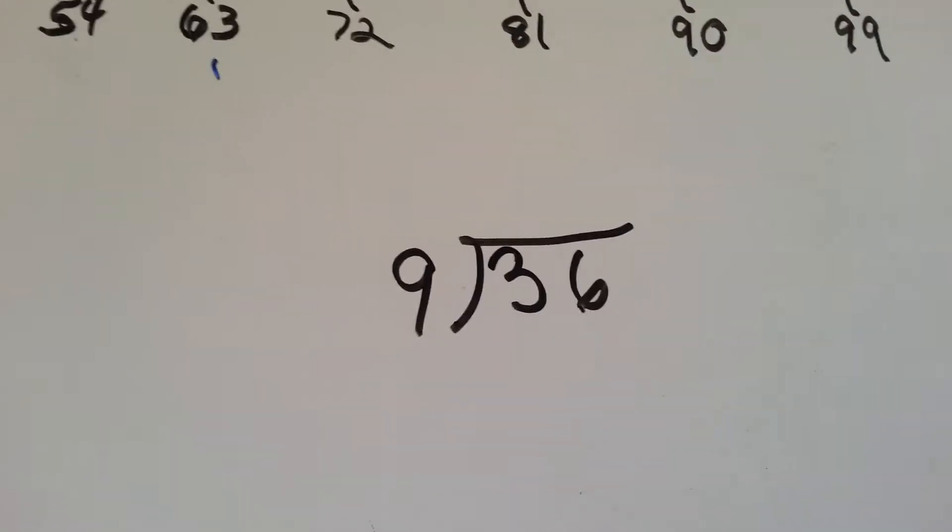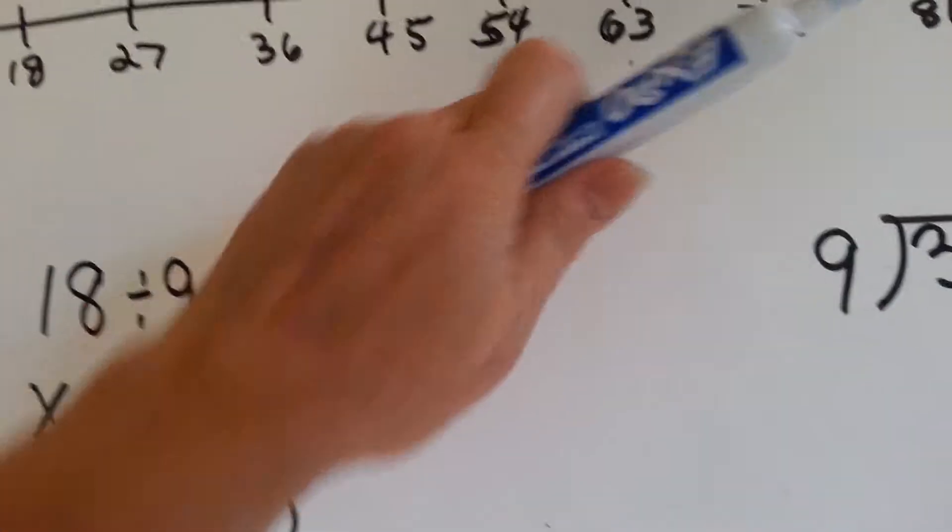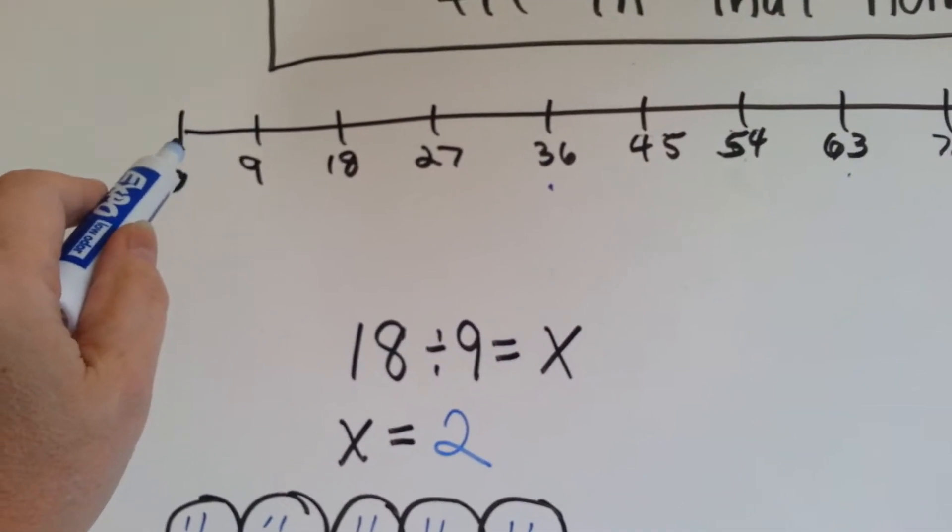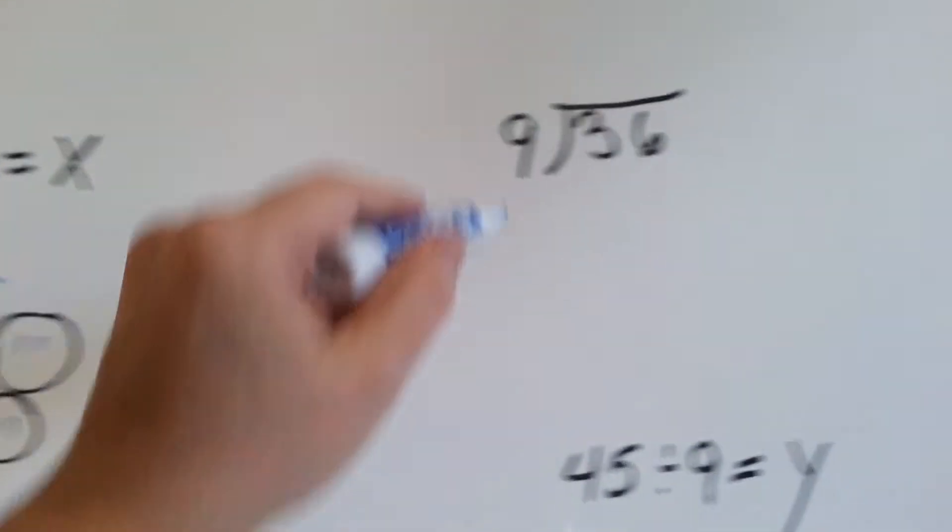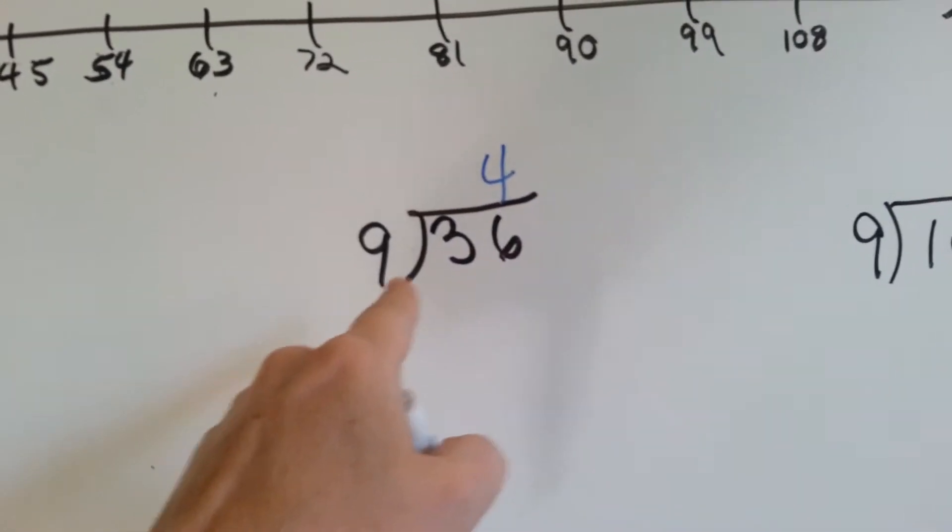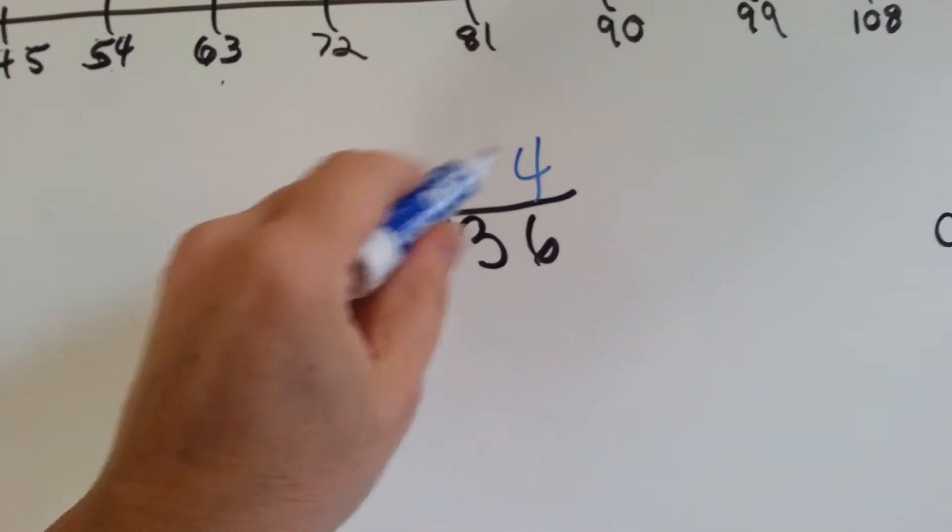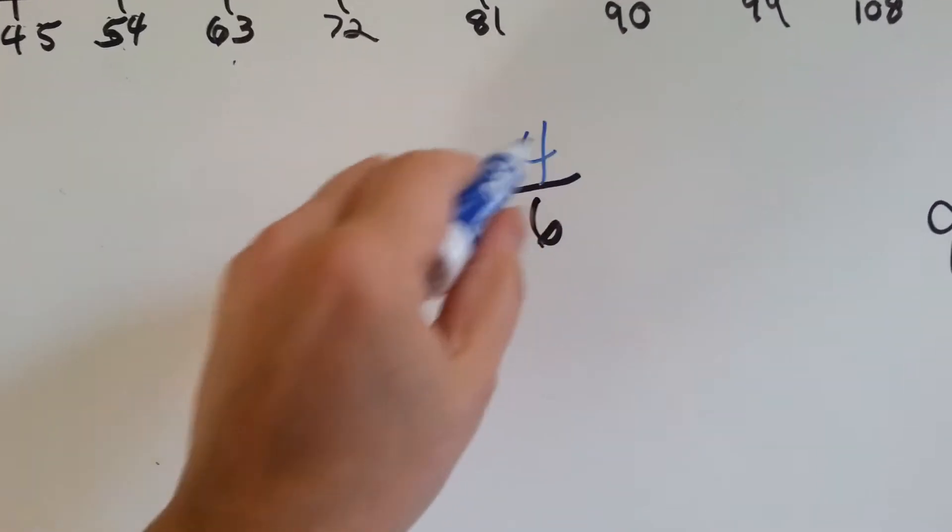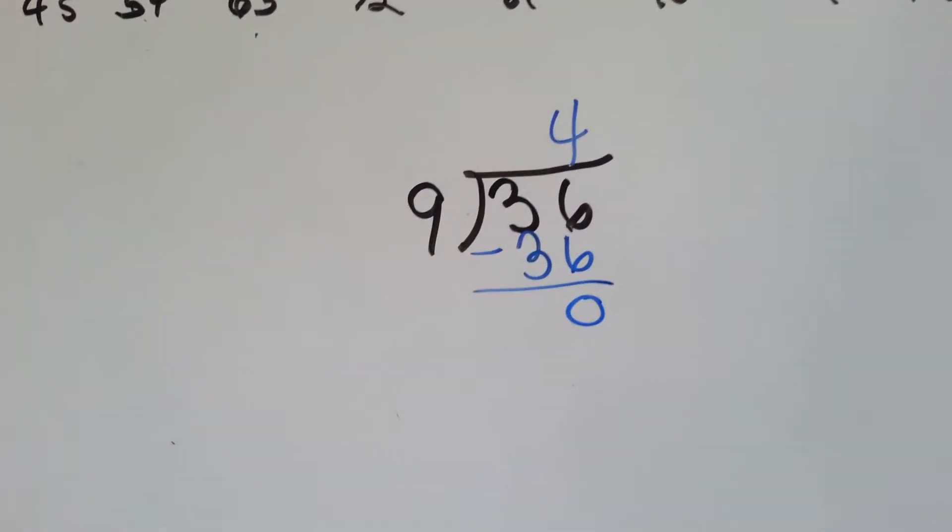Let's try this one. 9 goes into 36 how many times? Well, here's the 36. Let's skip count and see how many times we skipped. 1, 2, 3, 4. 9 goes into 36 4 times. Now we do our multiplication because 9 didn't go into 3, it went into 36. 9 times 4 is 36. We do our subtraction and we get 0.